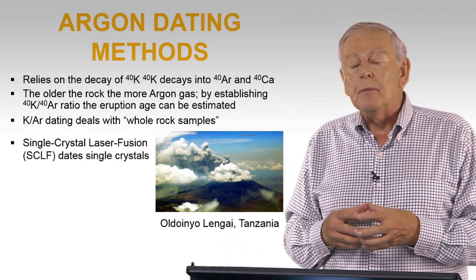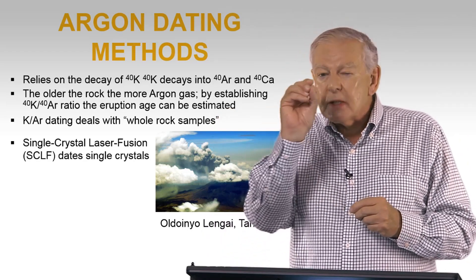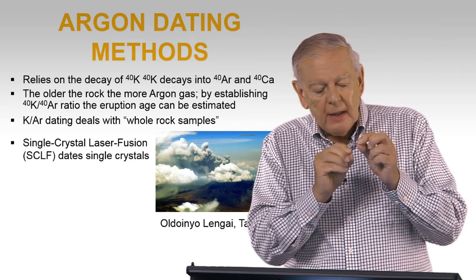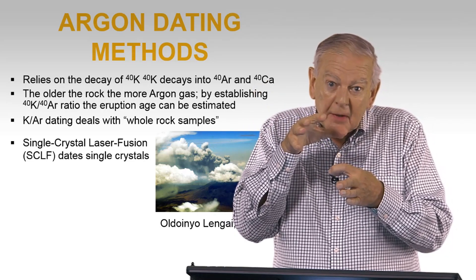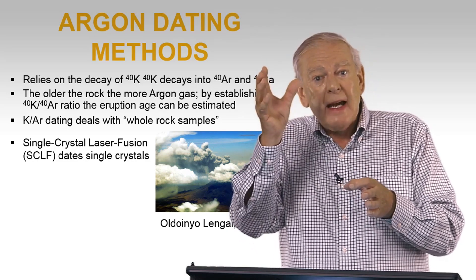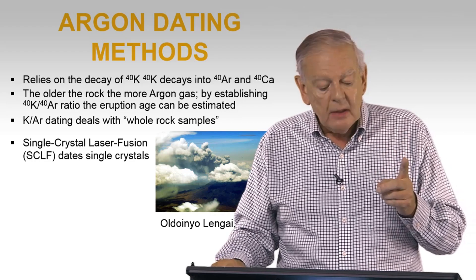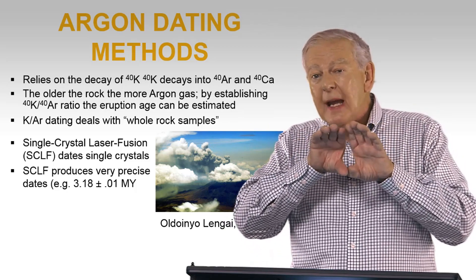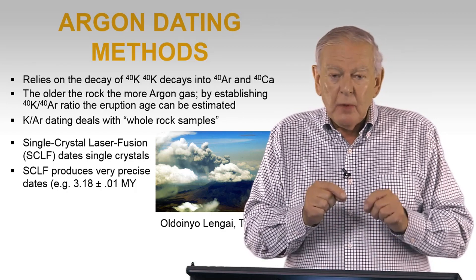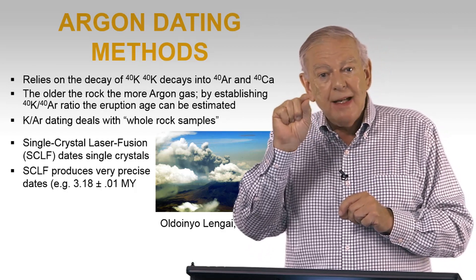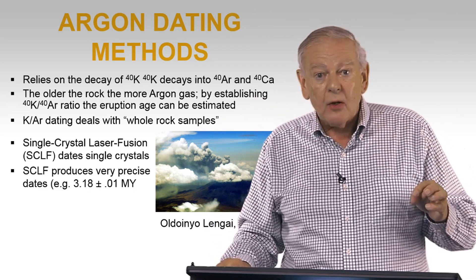Today most geochronologists use single crystal laser fusion. You take a single tiny feldspar crystal, place it in a closed vacuum in a small dish, and focus a laser beam on it to melt it — just as the volcano did when it erupted. The gases are released and measured. Dating single crystals produces very precise dates and has revolutionized our determination of ages for ancient events. When we say a rock layer is 3,180,000 years old, that means plus or minus 10,000 years — which is extraordinarily accurate for our work.